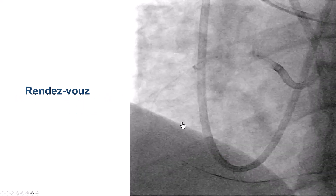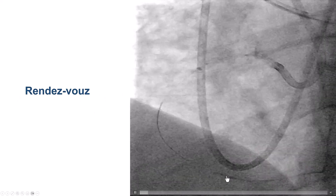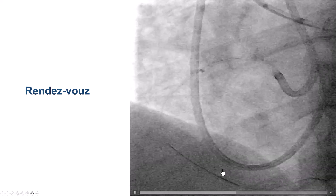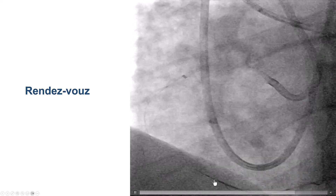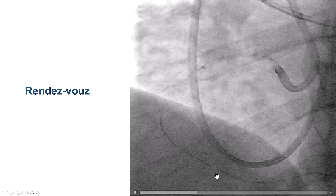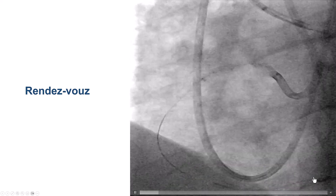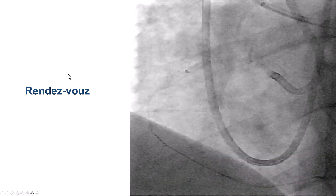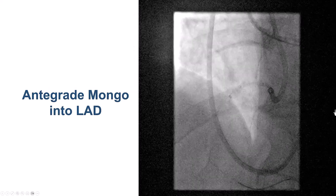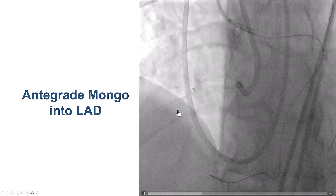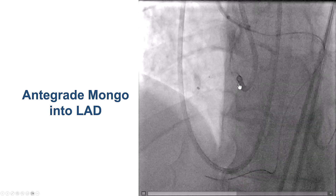We then used a technique that is not very commonly used — only in about 5% of retrograde cases — called the rendezvous. We pulled back the retrograde wire and advanced the antegrade wire, which went right into the retrograde microcatheter. This is the rendezvous technique. It accomplishes two things: first, it confirms that we are in the distal true lumen; and second, the wire now extends far distally, providing strong support for delivering antegrade equipment. We also used a guide extension on the antegrade guide catheter.